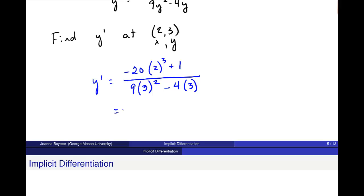So, in the numerator, I get negative 159. And then denominator, I get 9 times 9 minus 12 over 69. So, this is the basics of implicit differentiation.